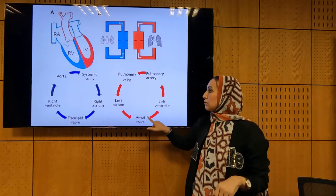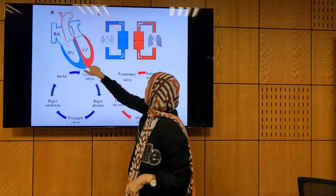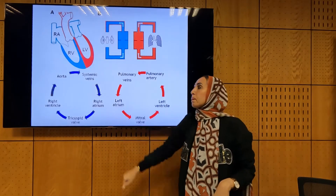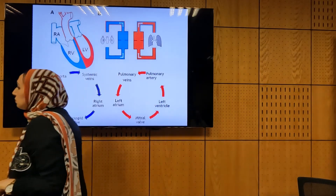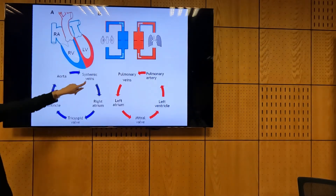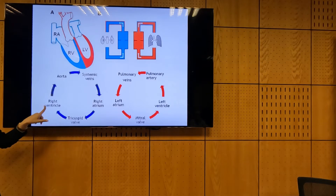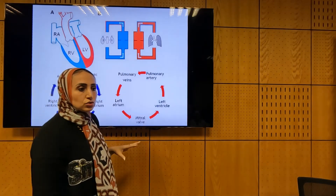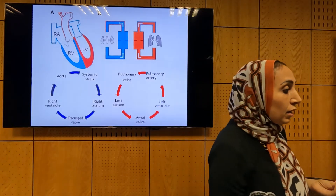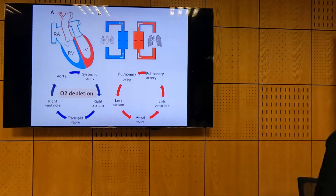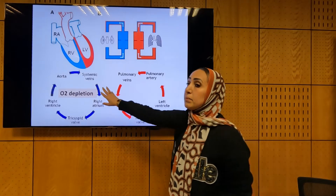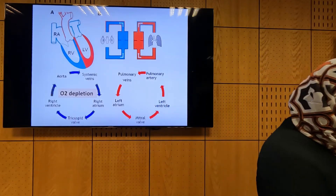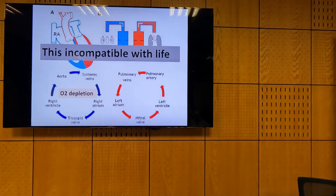And here, the aorta gives to the systemic veins, right atrium, tricuspid, right ventricle, and again to the aorta. This is how the TGA circulation will be. And this will lead to oxygen depletion in the systemic circulation. By time, the circulation will stop. So this condition is incompatible with life.